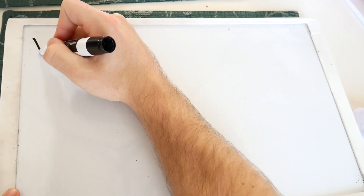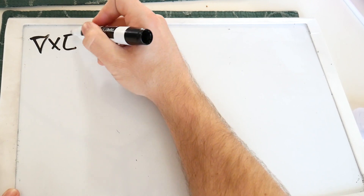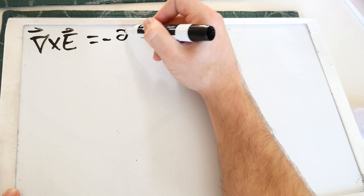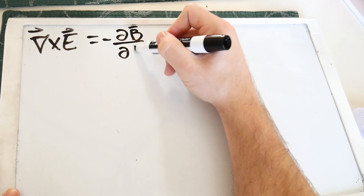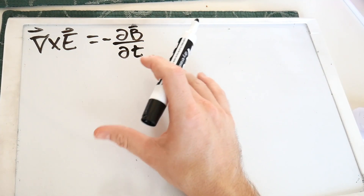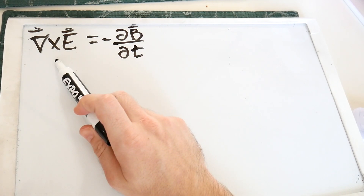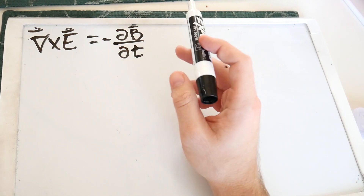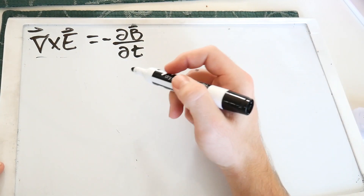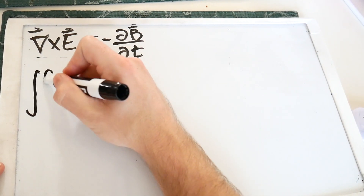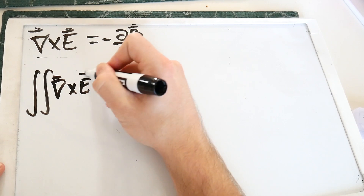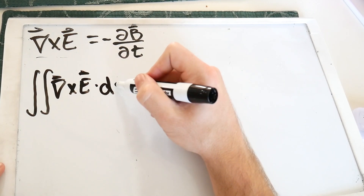The second of Maxwell's equations involves the curl of the electric field, which is equal to the negative time derivative of the magnetic field. One of the most important things to keep in mind when doing these conversions is to make sure that if you start with a vector on the left-hand side, you end with a vector on the right-hand side, and vice versa for scalars. The curl on the left-hand side tells us we're going to use Stokes' theorem. So we represent this as the 2D integral of the curl of E dotted into some area.